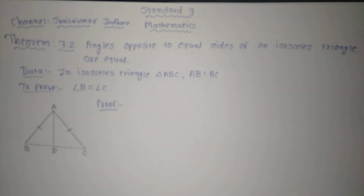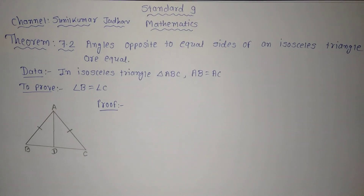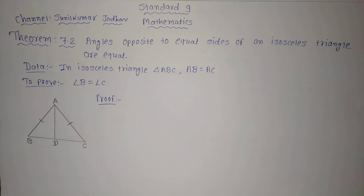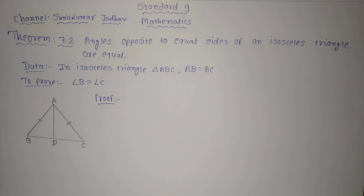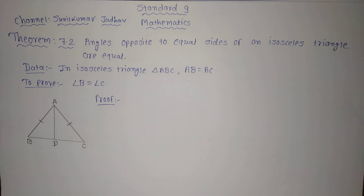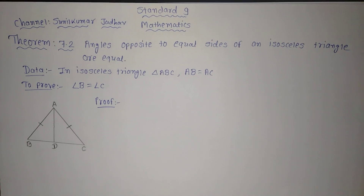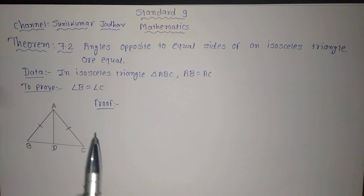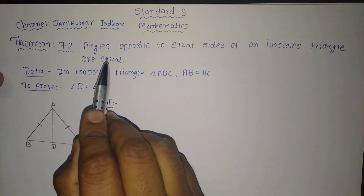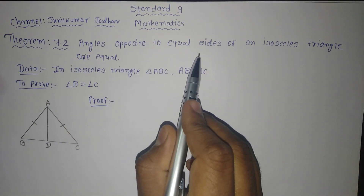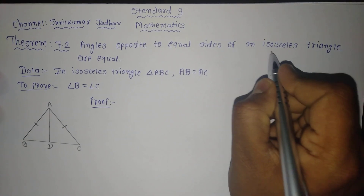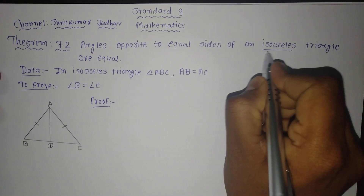Hello friends, welcome back to my channel. Here in this video, we are going to see one important theorem of standard 9 mathematics, that is as per NCERT textbook theorem 7.2. The statement of the theorem is: angles opposite to equal sides of an isosceles triangle are equal.